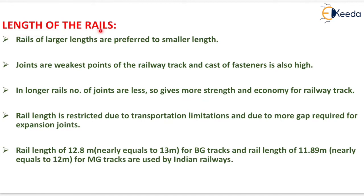The next topic is the length of rails. Rails of larger length are preferred over smaller length. Joints are the weakest point of the railway track and the cost of fasteners is also high. In longer rails, the number of joints is less, giving more strength and economy to the railway track. Rail length is restricted due to transportation limitations and due to the larger gaps required for expansion joints.